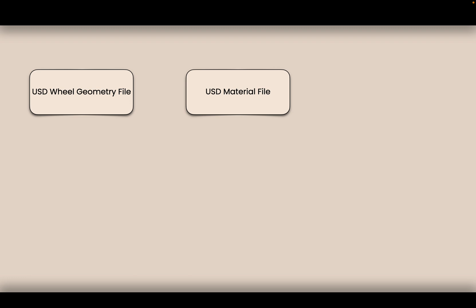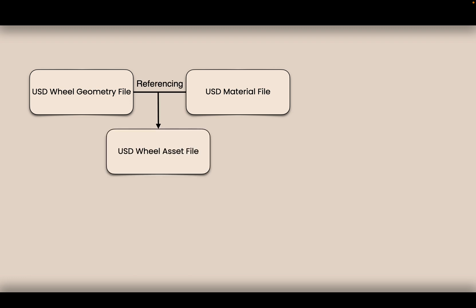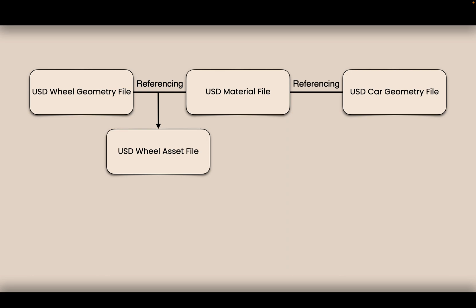We have a USD wheel geometry file and a USD material file — somewhere on disk, maybe on a server somewhere. We're referencing them together into a USD wheel asset file, creating a textured wheel. Then we have a USD car geometry file, referencing it together with a USD material file — which could be the same or different. We're referencing that together into a car asset file. It can be as simple or as complex as we'd like.